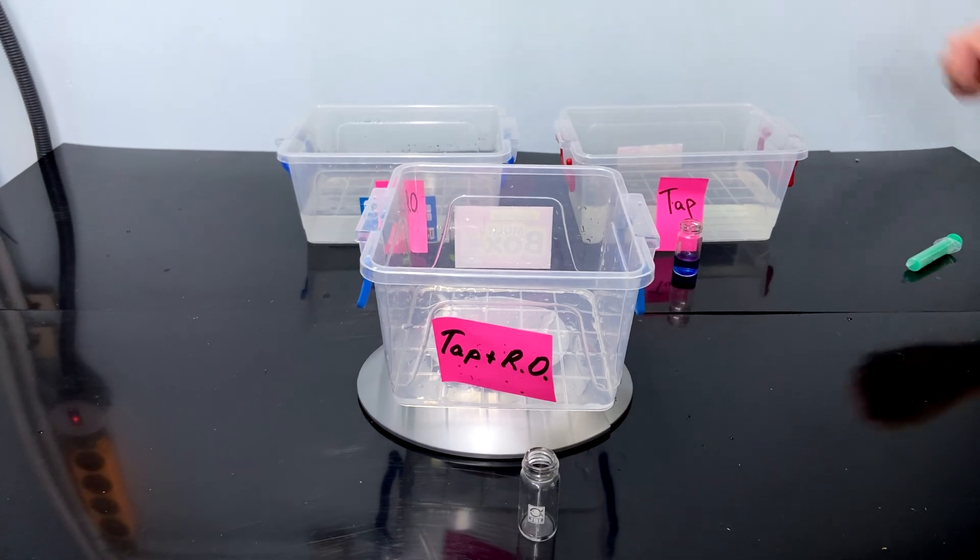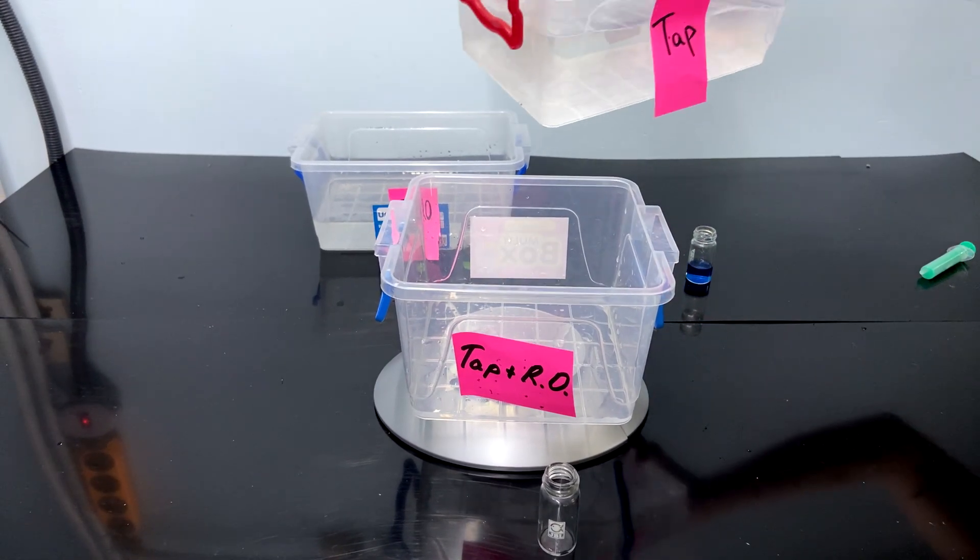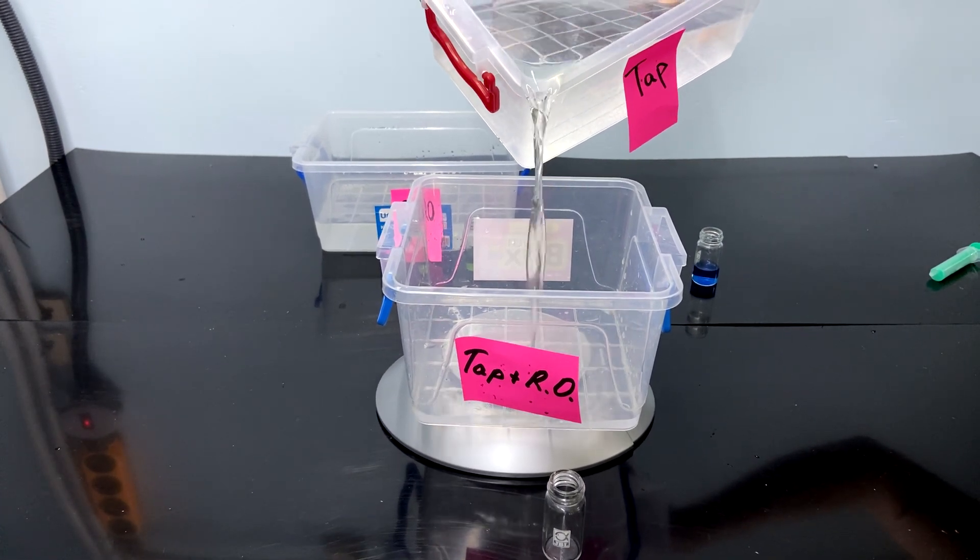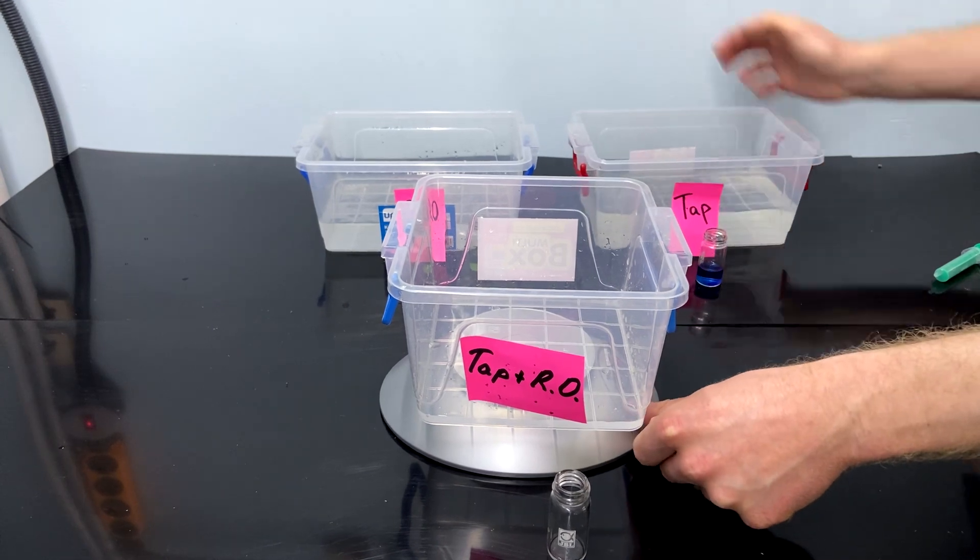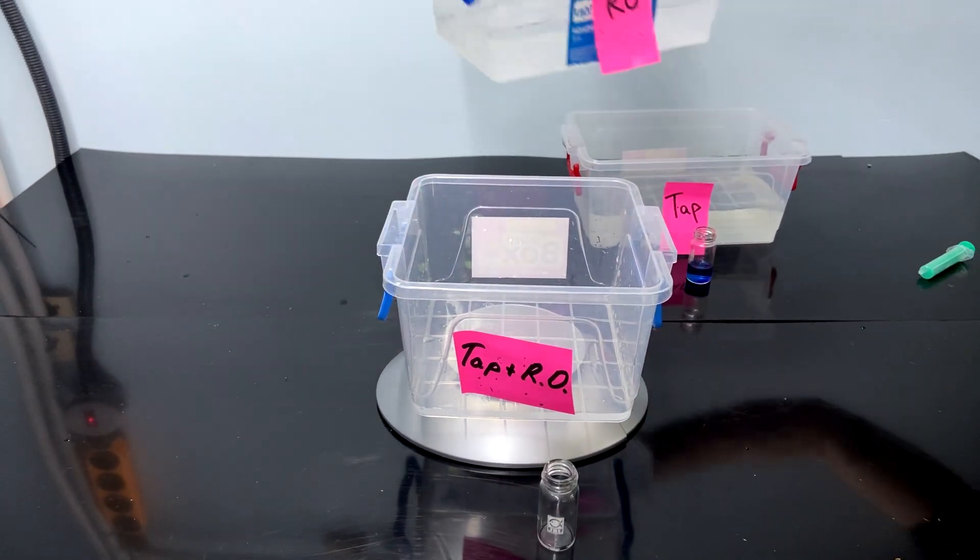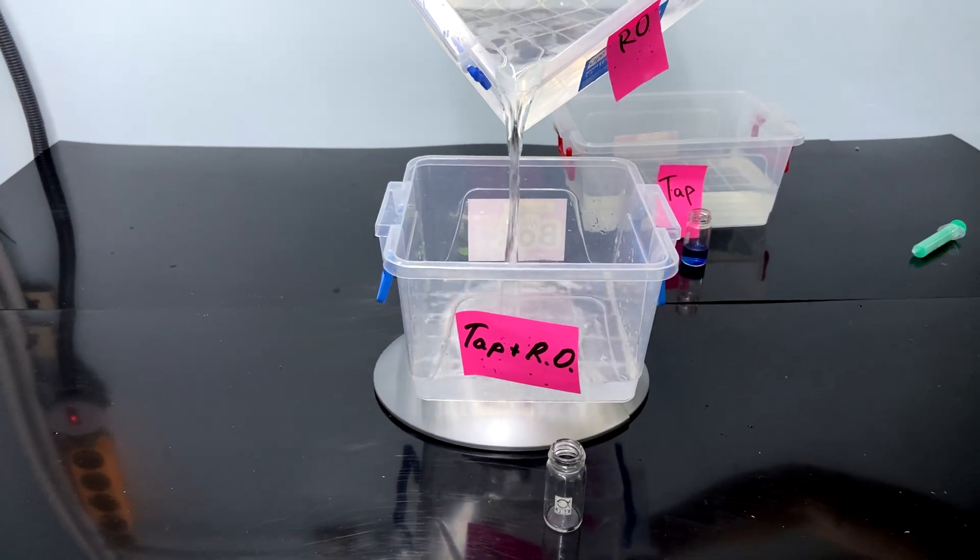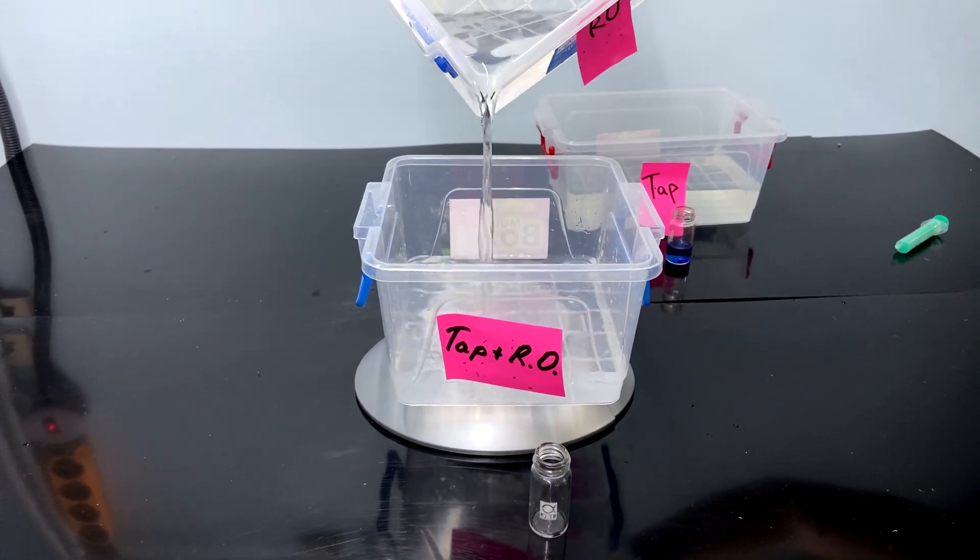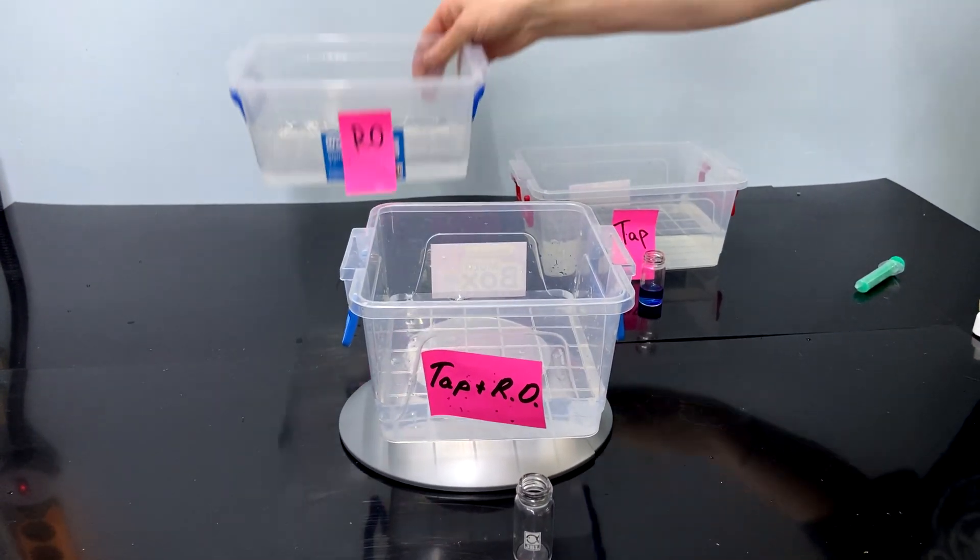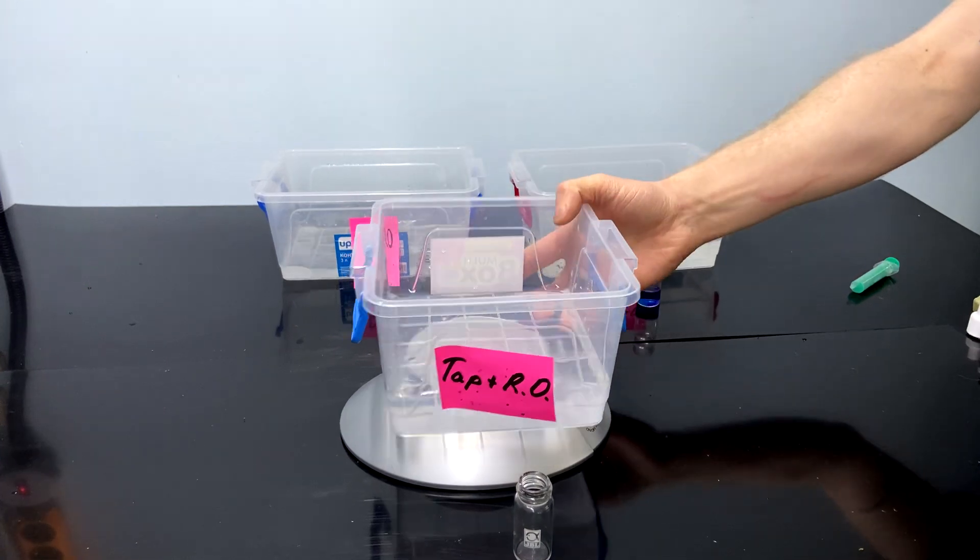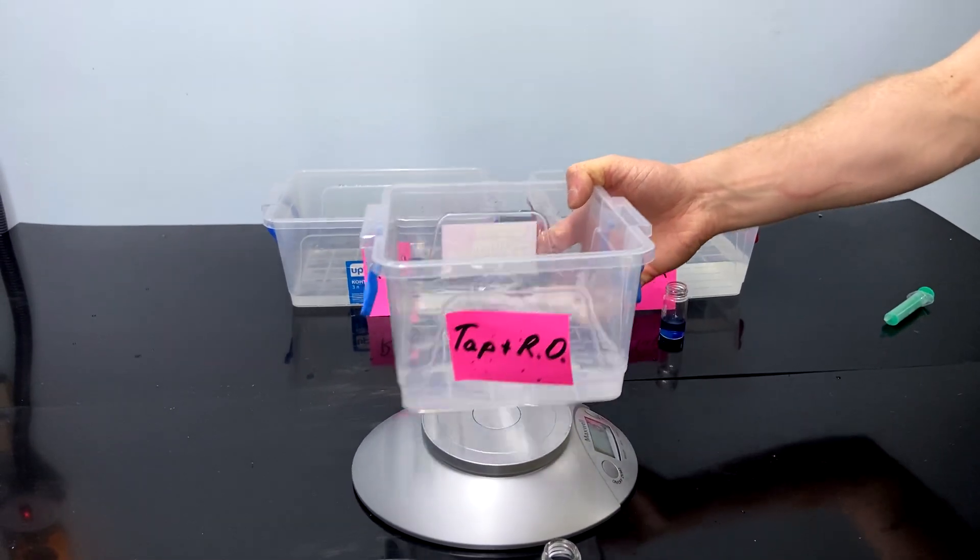Now we'll mix tap and RO water to get TDS from 60 to 80 ppm. Let's mix it a bit. You should probably memorize the appropriate ratio of RO and tap water. I know that I should add only 50 milliliters of tap water to 500 milliliters RO water for getting TDS from 60 to 80 ppm.